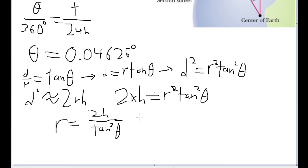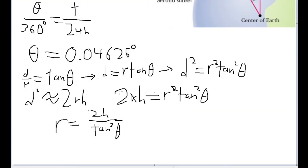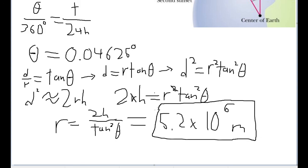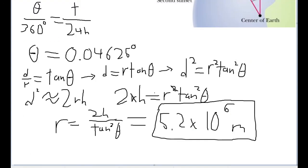Now subbing the h value, the height value, which is 1.7 meters, and the value in degrees we got for the angle, and in your calculator, make sure you're in degree mode and not radian mode. That's very important to get a proper reading. And the value we get for r, for the radius of the earth, is 5.2 times 10 to the 6th power of meters. And that is our answer to this very tricky and complex problem.